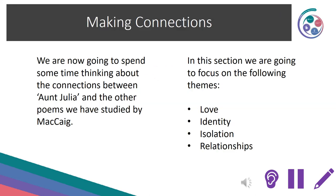Making connections: we are now going to spend some time thinking about the connections between Aunt Julia and the other poems we've studied by McCaig. In this section, we're going to focus on the following themes: love, identity, isolation and relationships. Be ready to pause the video and make notes as appropriate.